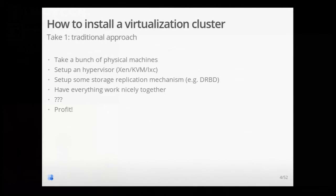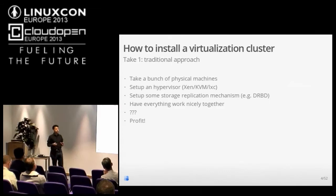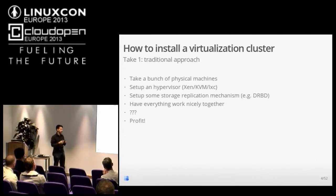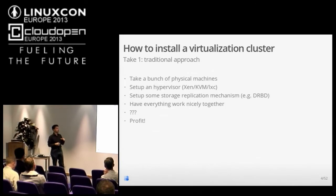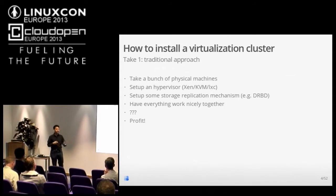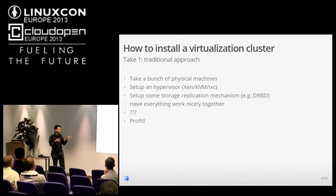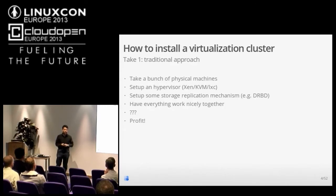The traditional approach to installing a virtualization cluster: you take a bunch of physical machines, set up a hypervisor of your choice — Xen, KVM, or LXC if you are fine with Linux solutions. Then you set up some storage or replication mechanisms so you can keep your VMs running even in case of hardware failures. Then you try to have everything working nicely together, and eventually everything works — hopefully.